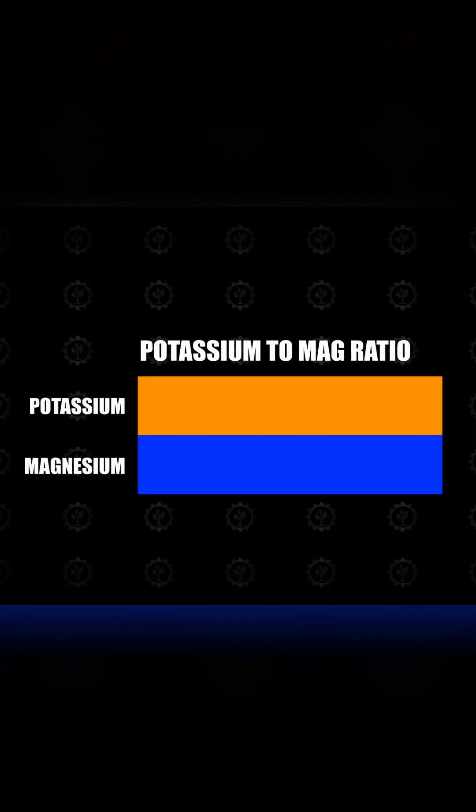Potassium is a cation, and some of the things I look for with this element relate to the other cations in the soil. We can get this from a soil sample looking at our base saturations and our parts per million. One thing I look for is the ratio between potassium and magnesium — I look at my PPMs of K and my PPMs of magnesium and try to get those as close to one-to-one as possible, or if it's heavier on the magnesium side, I feel okay. Then looking at base saturations, if potassium is below two percent, we're going to see a gain by applying potassium to that field.